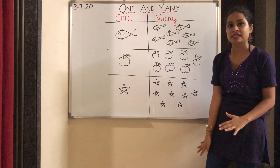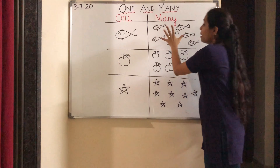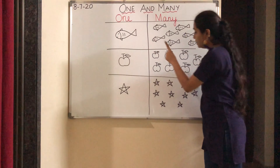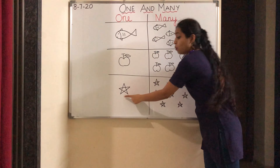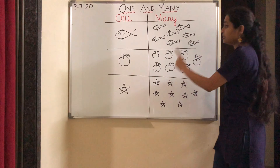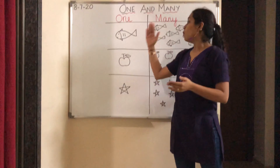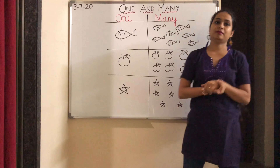Let's revise this. One fish, many fishes. One apple, many apples. One star, many stars. So today we learned one and many.